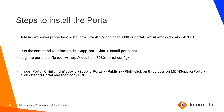Let's discuss the steps to install the portal. First, we need to add a parameter in the cmx-server.properties file: portal.cmx.url. Based on your application server, you need to add the parameter — for JBoss it should be http://localhost:8080, and for WebLogic it should be http://localhost:7001.